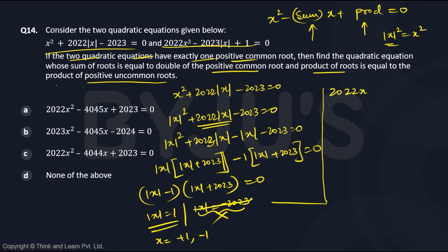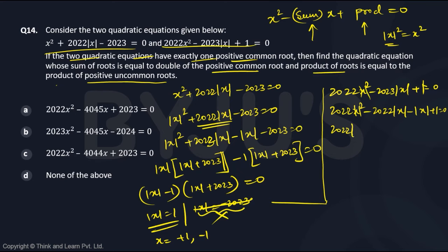The second equation is 2022x² − 2023|x| + 1 = 0. Factorizing this: 2022x² − 2022|x| − |x| + 1 = 0. Note that x² must be treated as |x|² throughout. Taking 2022|x| common gives 2022|x|(|x| − 1), and taking −1 common from the remaining terms gives −1(|x| − 1) = 0.